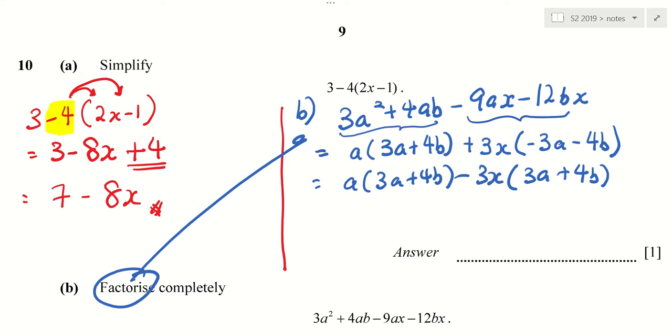Must change because these two are different. One is 3A plus 4B. One is minus 3A minus 4B. Last step. I can now factorize 3A plus 4B. Then this will be A minus 3X.